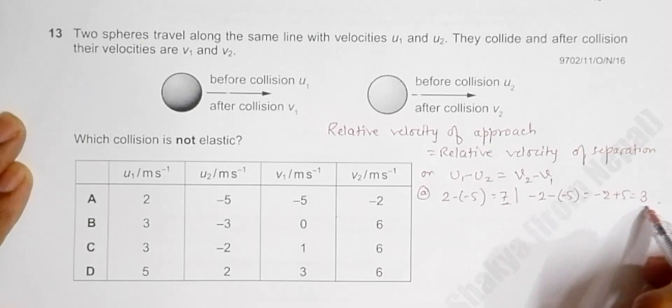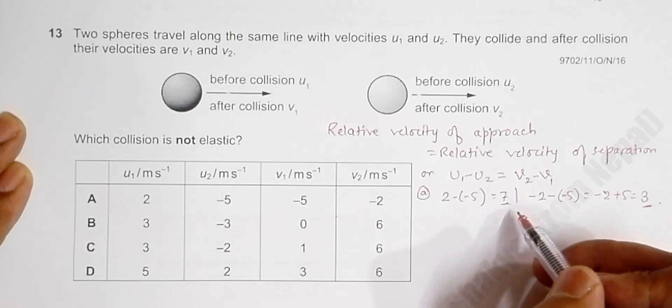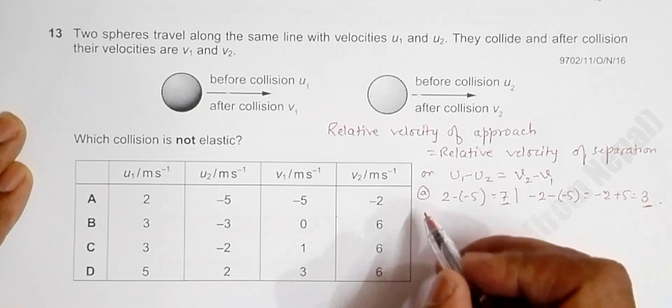So that means our answer is in choice A itself, because these two quantities are not equal. Since v₂ minus v₁ is less, the collision is not elastic.